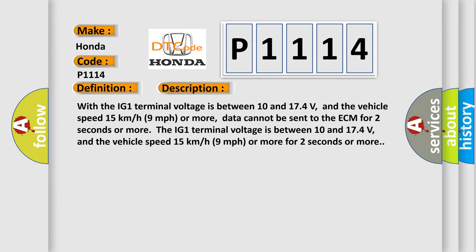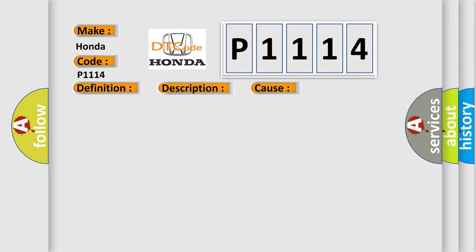The IG-1 terminal voltage is between 10 and 17.4 volts, and the vehicle speed 15 kilometers per hour or 9 miles per hour or more for 2 seconds or more. This diagnostic error occurs most often in these cases.